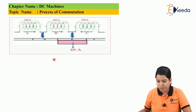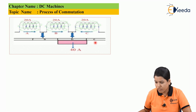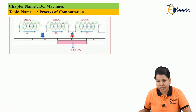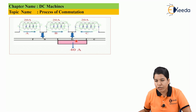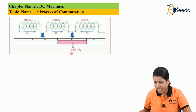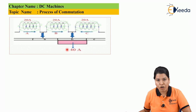Consider this figure. There are three coils A, B, and C, each carrying a current of 20A, and three commutator segments A, B, and C. In this position, the brush is totally across commutator segment B. The total current across the brush is 40A: 20A from coil B plus 20A from coil C.